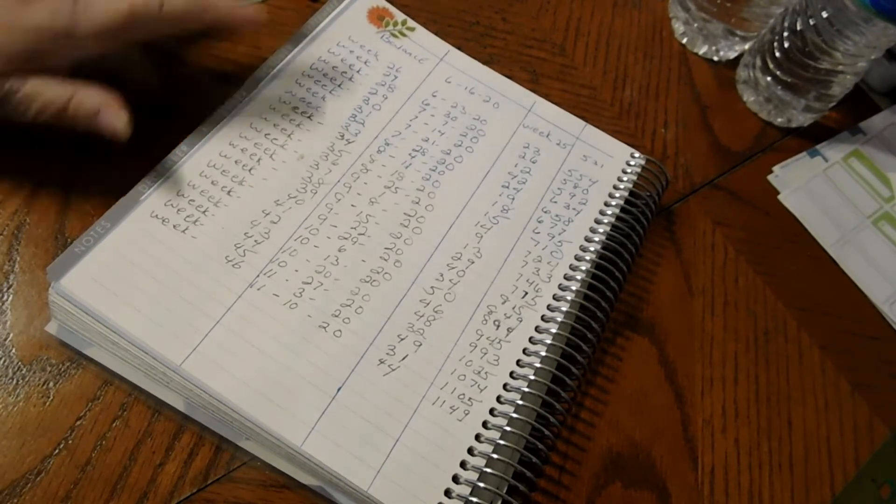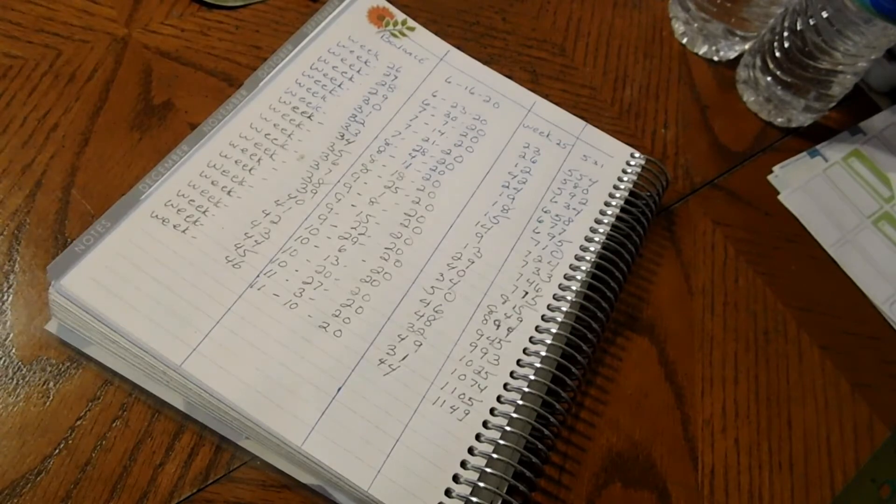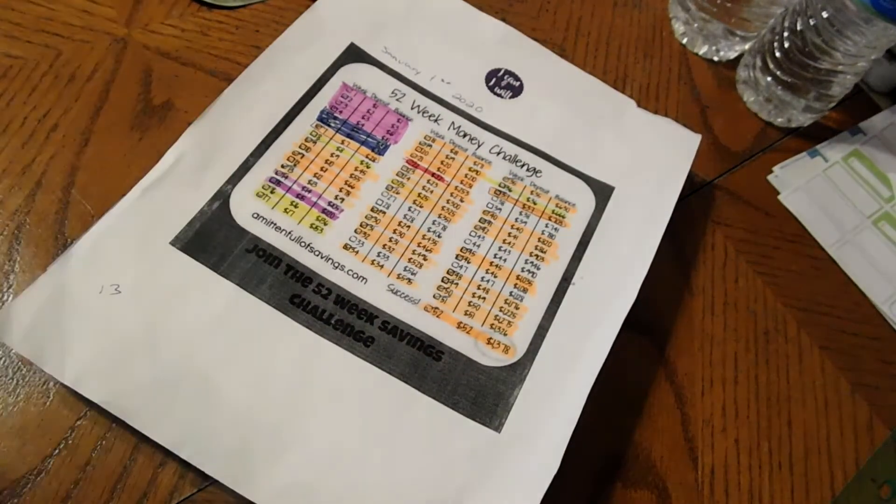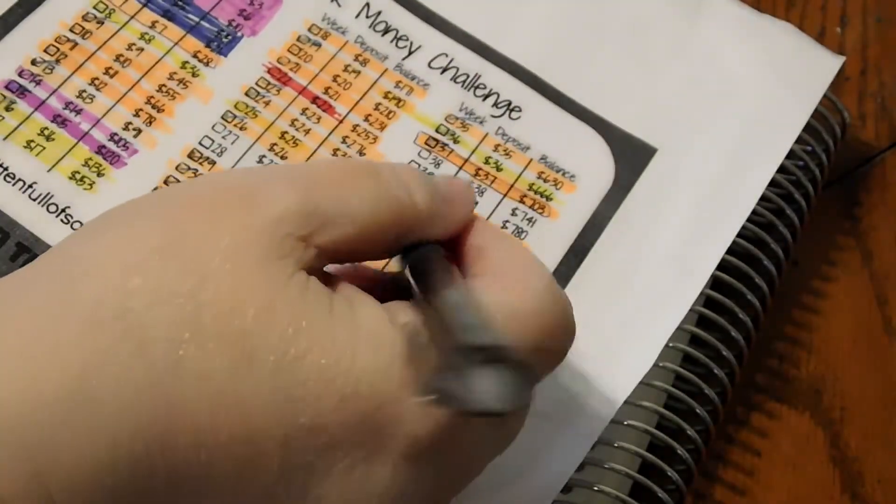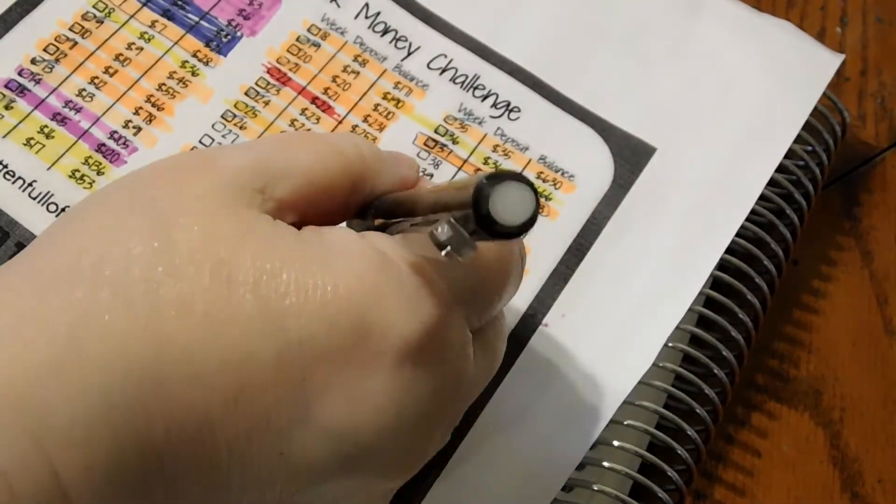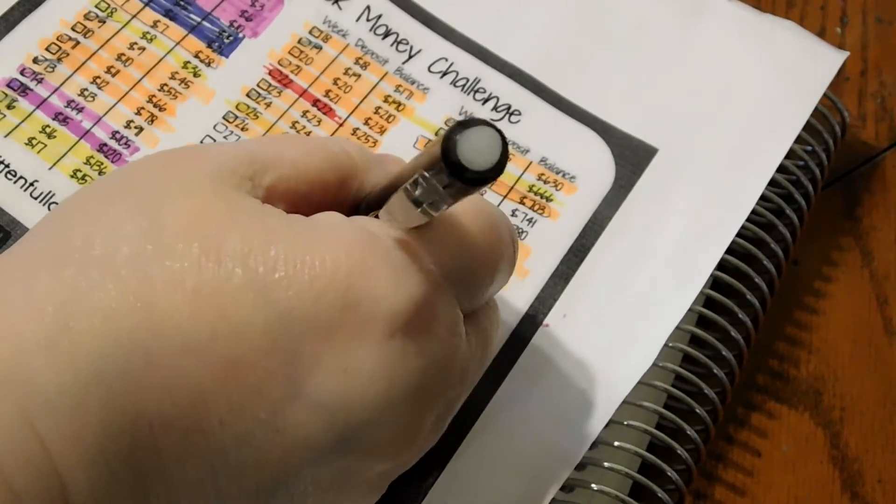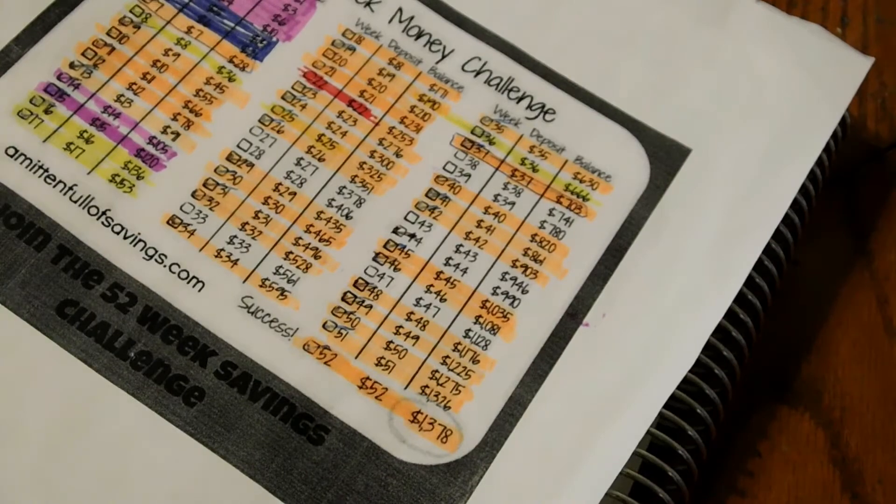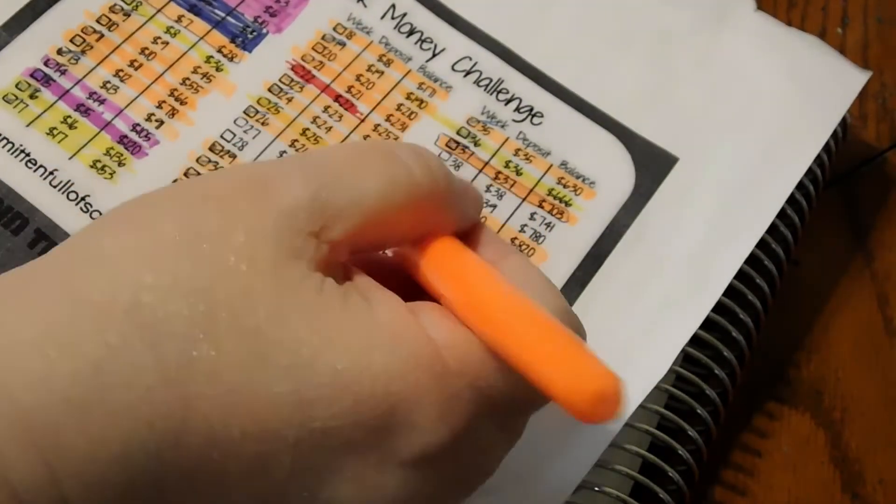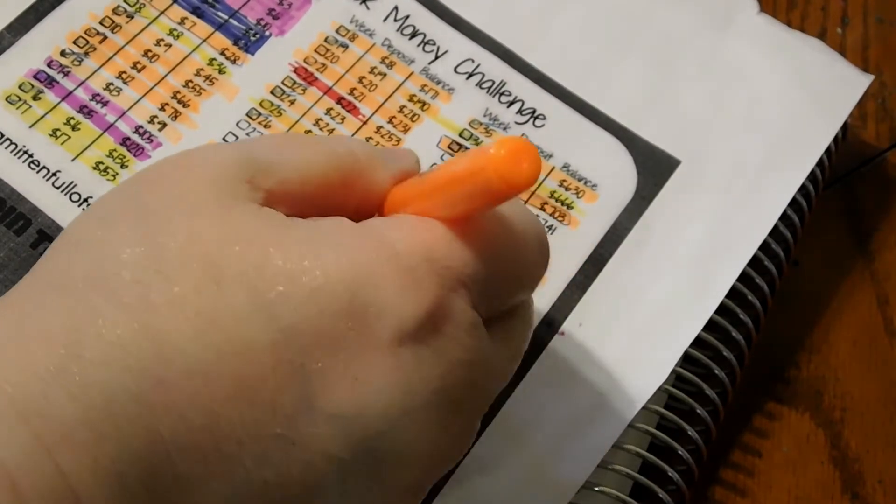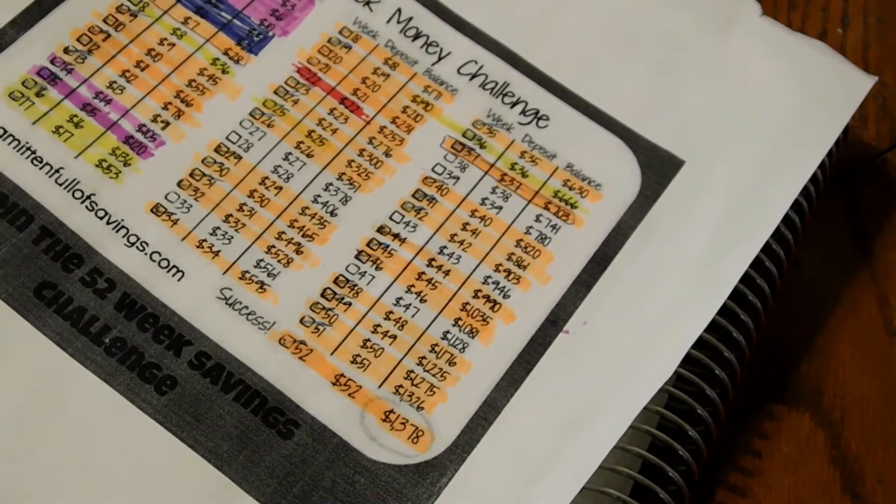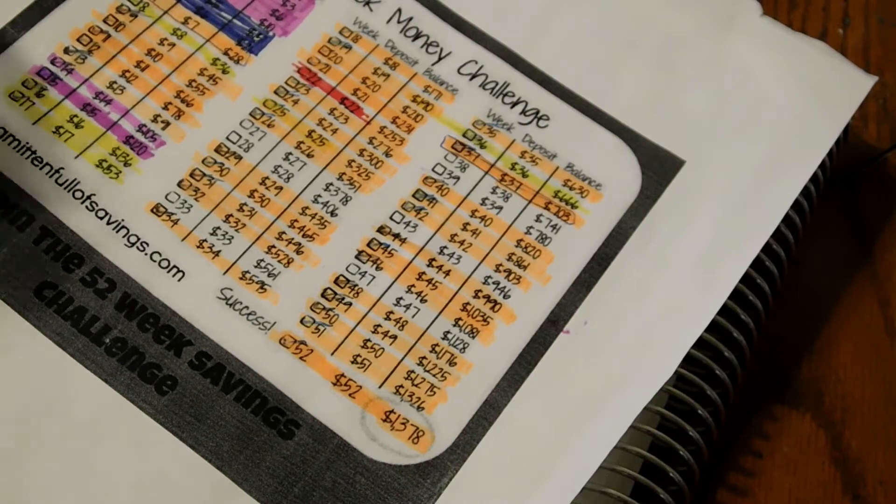So we're gonna mark off our paper here. Let's zoom you in. We're gonna mark off the $44 line because that's what we put in. Get our little highlighter and highlight that so we know we did that one. So that one is done.